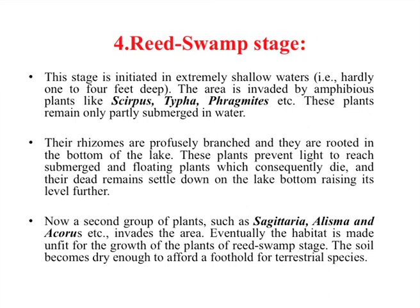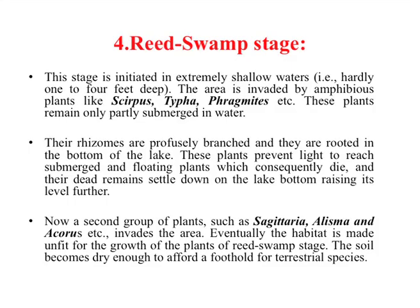The fourth stage is the reed swamp stage. Plants here grow in extremely shallow waters of 1 to 4 metres depth. These plants are of amphibious nature — able to grow in both aquatic and terrestrial conditions. Examples include Typha, Phragmites, Sagittaria, and Alisma. These plants grow in the reed swamp stage.